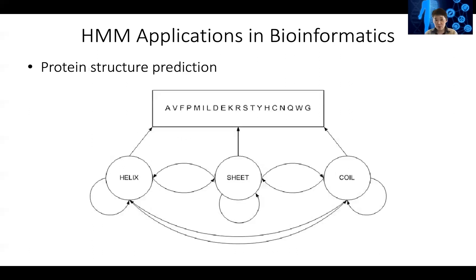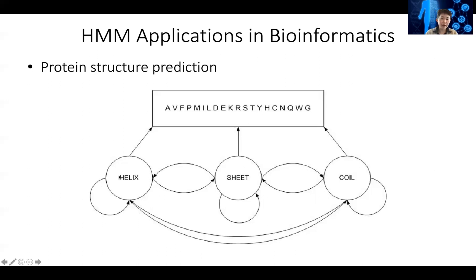You can also use the hidden Markov model for protein structure prediction. Here the hidden states are the secondary protein structures that are known to represent protein structure, which includes alpha helix, beta sheet, and coil.